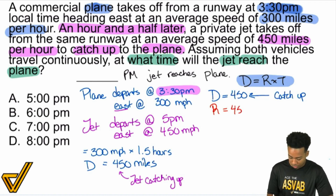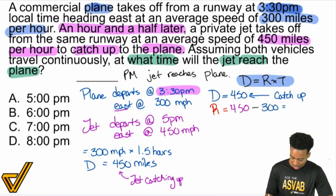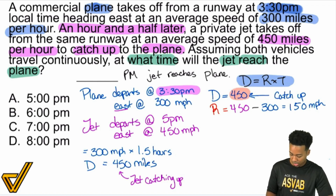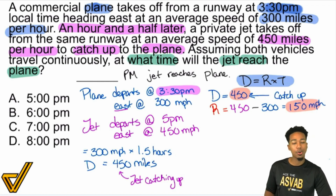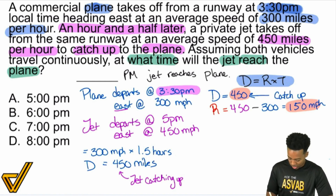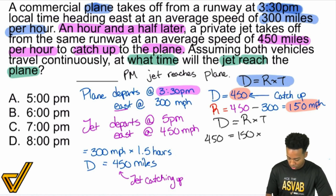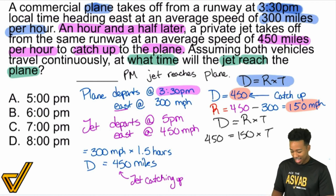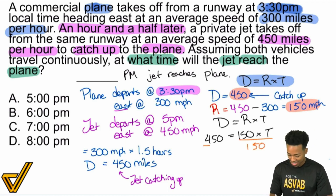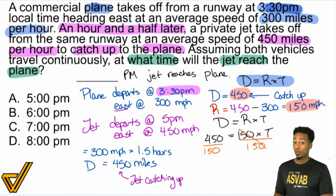The catch-up rate will be 450 from the jet minus 300 miles per hour for the plane — that gives us 150 miles per hour. There is our true rate. We have our true distance and our true rate. Now it's time to find the true time. Distance equals rate times time: 450 equals 150 multiplied by time. We divide both sides by 150. 450 divided by 150 — eliminate those zeros — 45 divided by 15 equals 3.